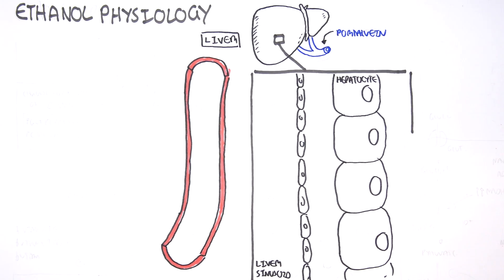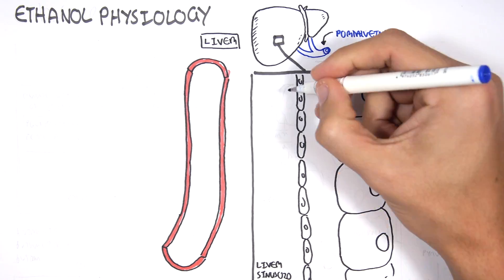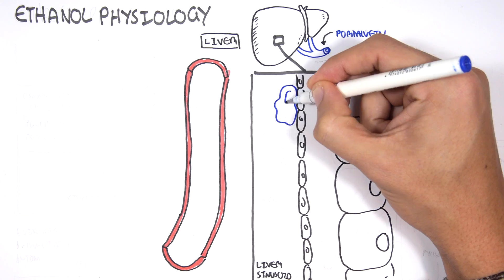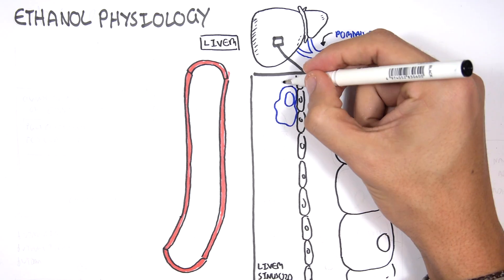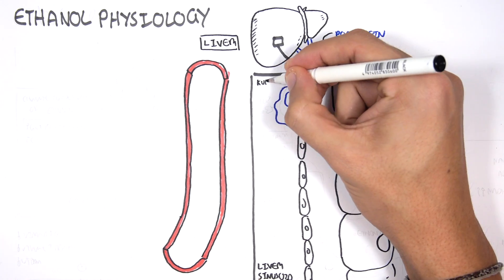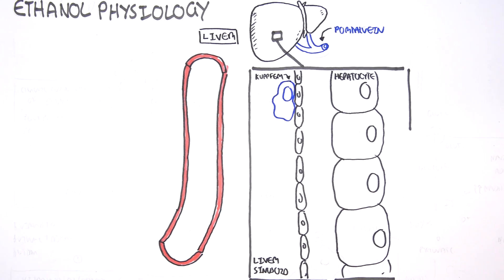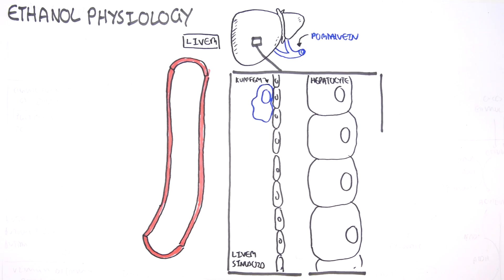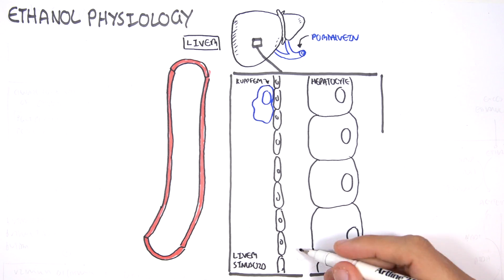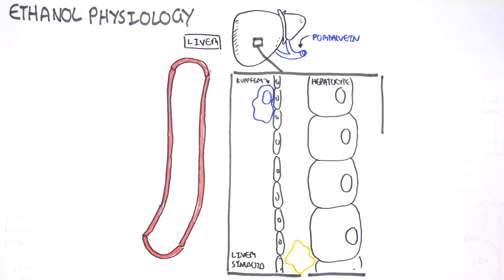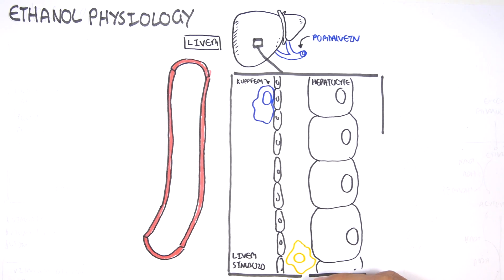Here is the liver sinusoid. Within the area there are also liver macrophages called Kupfer cells. There are also hepatic stellate cells here, which are normally at rest - they stay dormant, not really active.